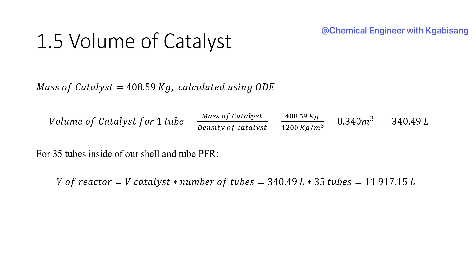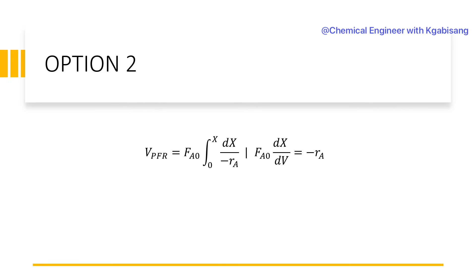Now that we have the catalytic weight, we can calculate the volume of catalyst for one tube by dividing the mass by the density, giving us a volume of 340.49 liters. For the number of tubes, I assumed five tubes within this reactor. Multiplying the single-tube volume by five gives a total reactor volume of 11,917 liters for Option 1.